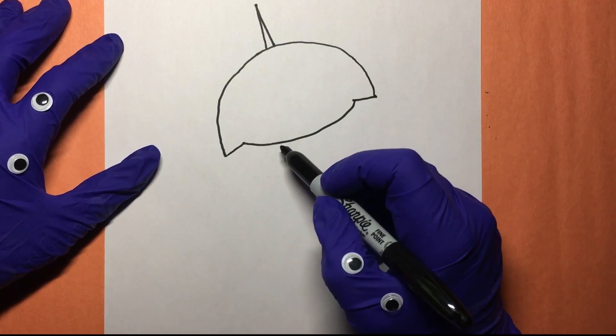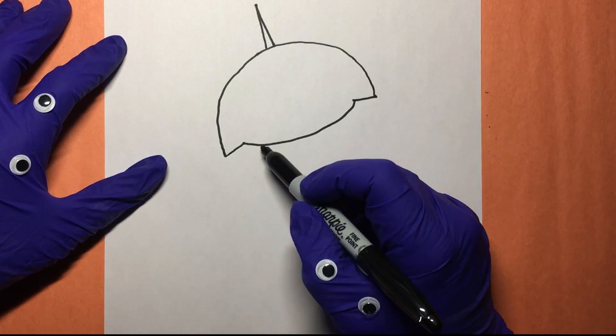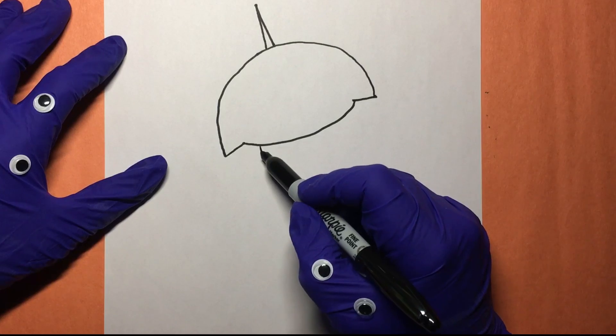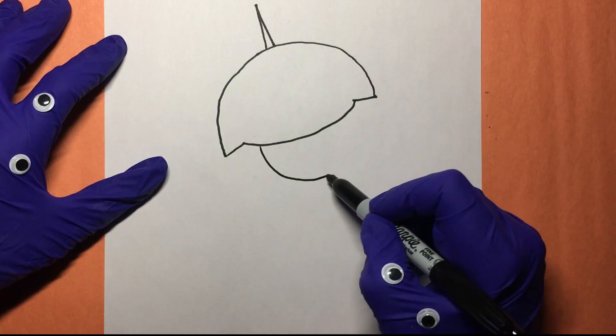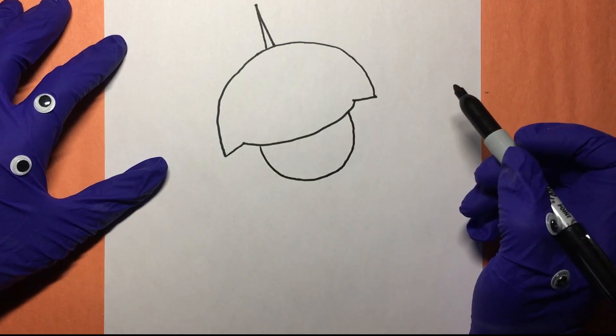And then Baby Shark's got a bit of a smile on him, don't he? He likes to come around. Big old semi circle here. That looks good.